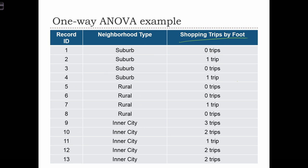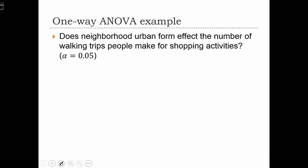The variable that we're investigating is the number of shopping trips each individual takes per week by foot. The question is, does the neighborhood urban form, that's our grouping variable, affect the number of walking trips people make for shopping activities? We want to be able to say yes, urban form has an effect on shopping activities, or no it doesn't, and we want to do it at a level of 95% confidence, or we want the significance level to be set at 5%.